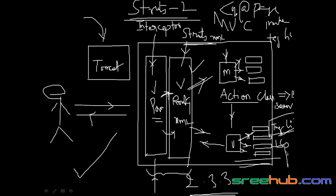This is the environment we are going to work on. We have seen the same picture before — three things: model, view, and controller. In the controller path, we have an XML. The main person who is going to redirect everything is the struts XML. The interceptor is something which works as a firewall for this controller.